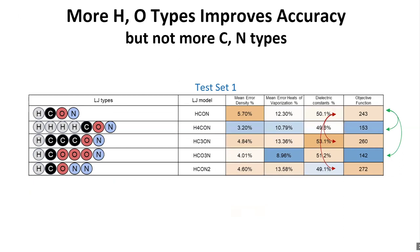Looking more generally: splitting hydrogens into four types gives improvement from 243 to 153. Splitting oxygen types from HCON to HCO3N also gives improvement, about the same as splitting hydrogens. Interestingly, for both test sets, splitting carbons makes things worse on the test set, and splitting nitrogens makes things worse on the test set — not a lot, but they're not better. So those splits seem to be of secondary value, if any, in this context.